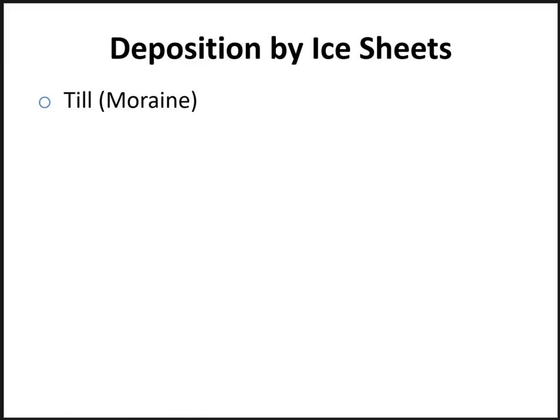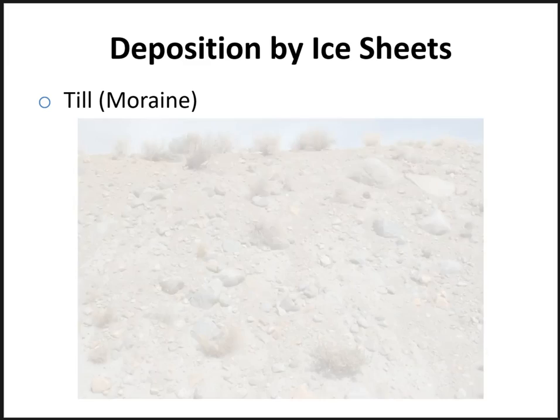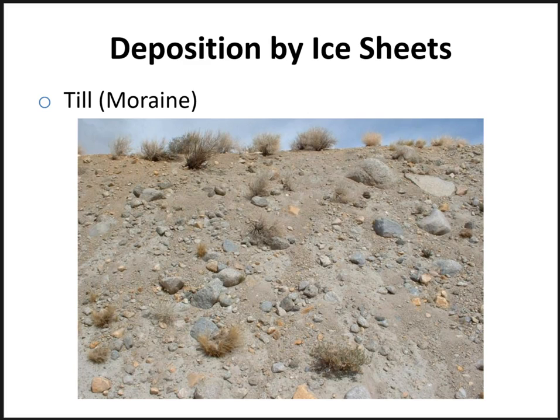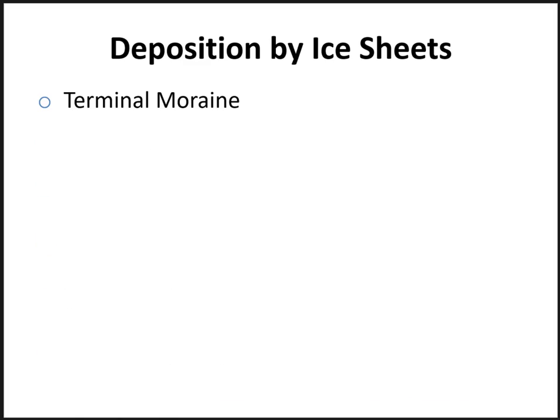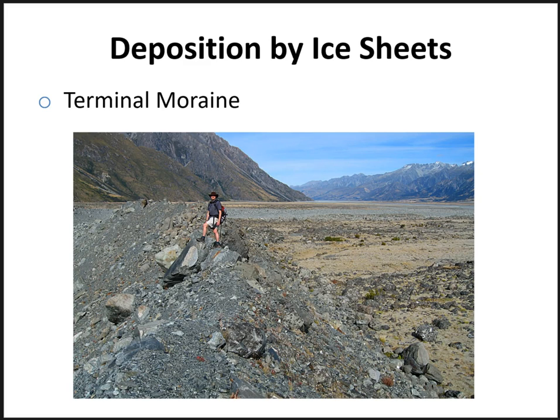There are several types of depositional features associated with continental ice sheets. Till — also called rain — is a simple deposit of fine and coarse textured material, distinguished by its lack of any sorting; large and small pieces of material are randomly assorted. Where the leading edge of a glacier was located, a terminal or end moraine can be found, marking the furthest advance of an ice sheet. Here we can see the till left by this glacier as it moved down the valley, pushing debris and leaving this terminal moraine.